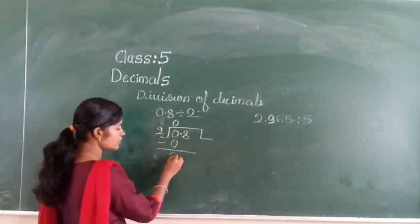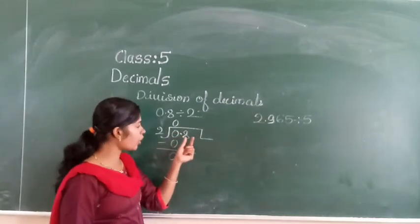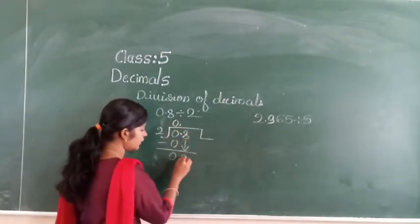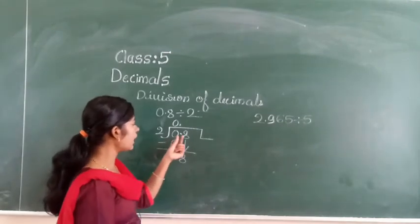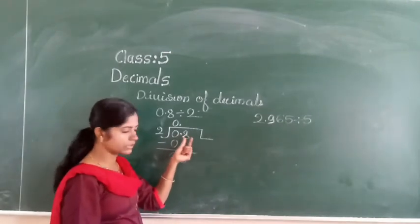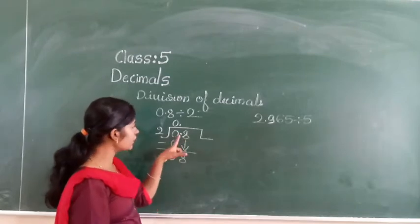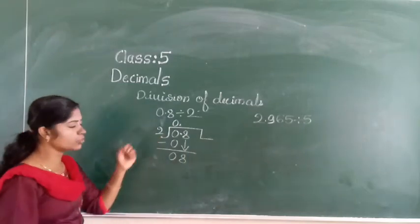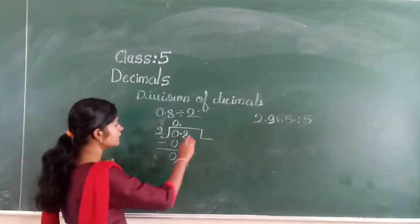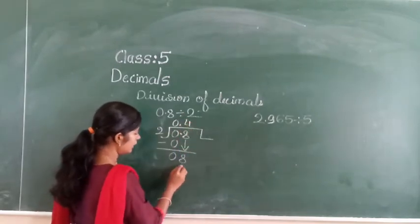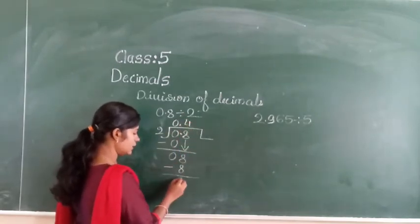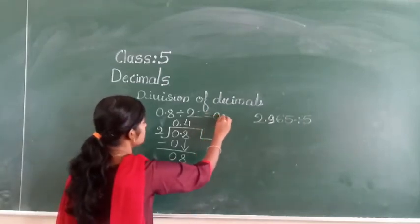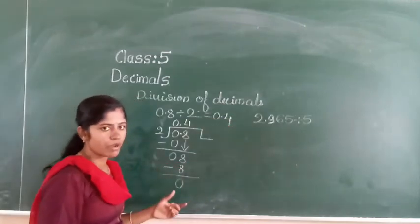0 minus 0 is 0. Before taking the digit after the decimal point, you must give a point here. Next you take this 8 down. When you are taking digits after the point, first you have to give the point, then take the digit down. In the 2 times table, 8 is there — 2 fours are 8. So 8 minus 8 is 0. The quotient will be 0.4. This is how you divide the number.